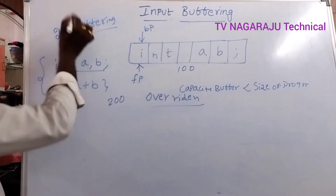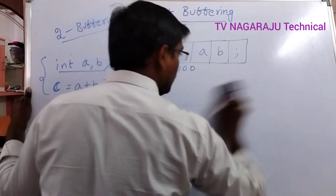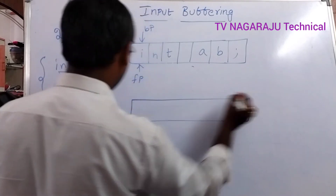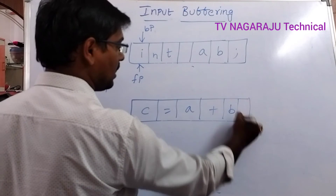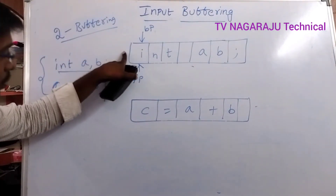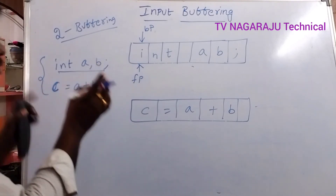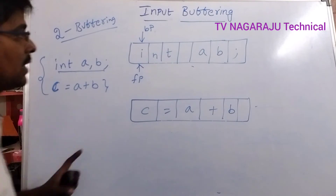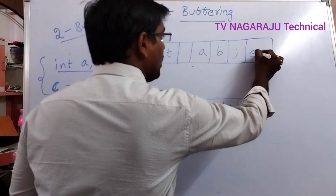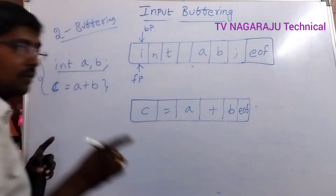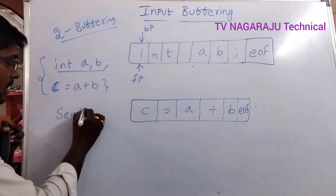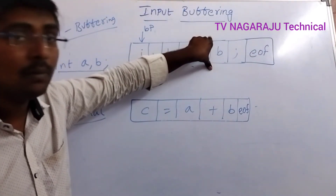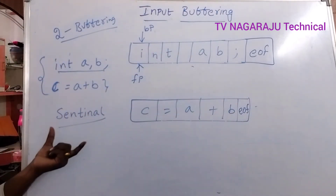To overcome this overwrite problem, the two-buffer scheme is implemented. Instead of maintaining a single buffer, two buffers are maintained. For example, a program like 'C = A + B' can be split across both buffers. To identify the end of each buffer, a special character EOF — end of file, also called a sentinel character — is placed at the end of each buffer.